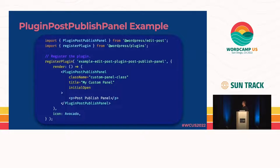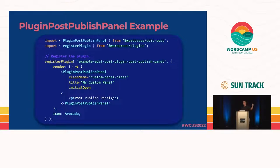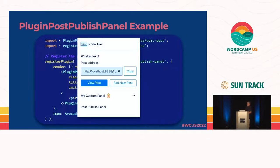The code for that looks like this — the only difference between this and the last code slide is the name of the SlotFill. That's pretty common when working with SlotFill because it's so location-based. It's exactly the same code under the hood, just in a different spot. And when something renders, it would look like this — my custom panel with the avocado. The avocado is a running theme; this is developer advocate.